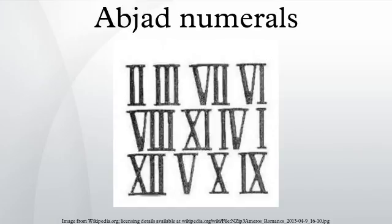In the abjad system, the first letter of the Arabic alphabet, alif, is used to represent one. The second letter is used to represent two, and so on. Individual letters also represent tens and hundreds — qaf for twenty, qaf for one hundred, etc.